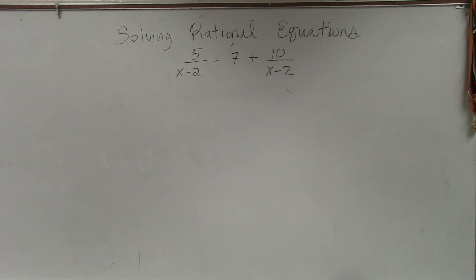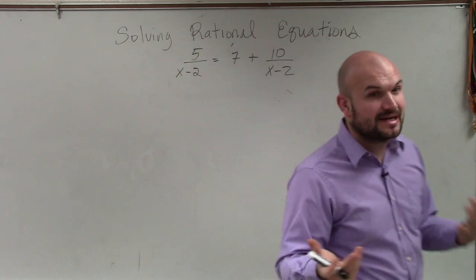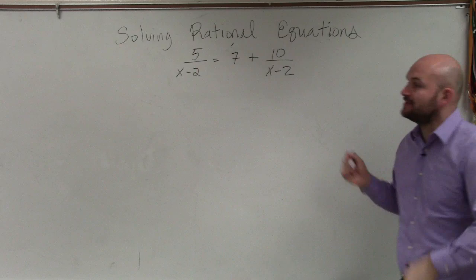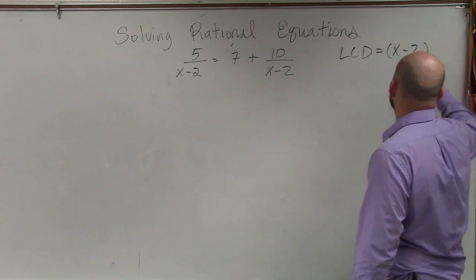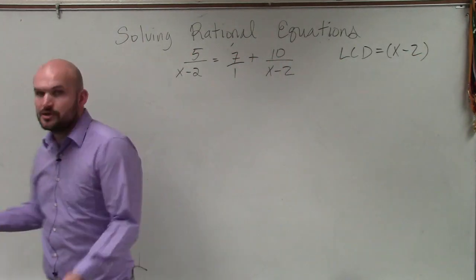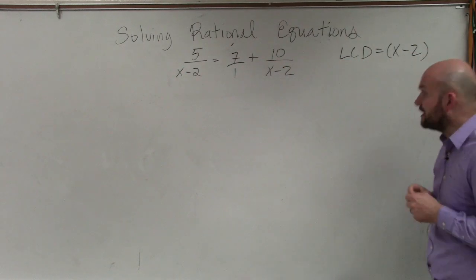All right, so in this example, you guys can see that we have a denominator. And both of our denominators is x minus 2. So then in this case, when I wanted to go and identify my LCD, my LCD is going to be x minus 2. Because really, this denominator is 1. So 1 and x minus 2 is obviously going to produce a common denominator of x minus 2.